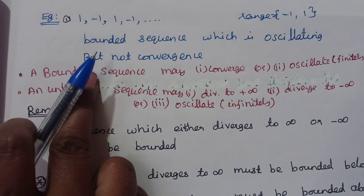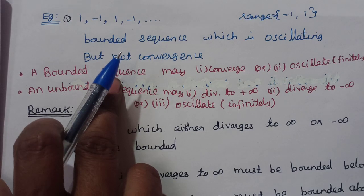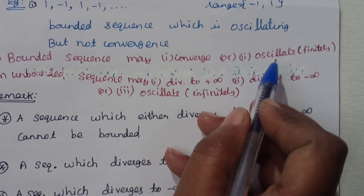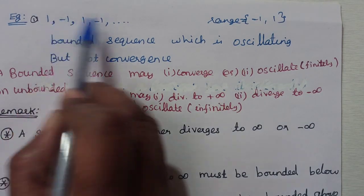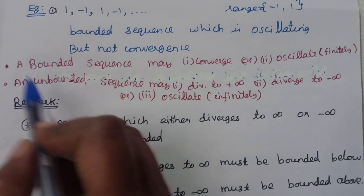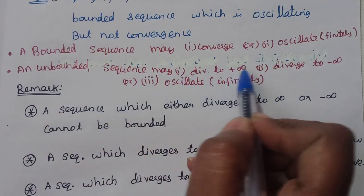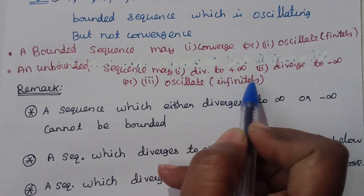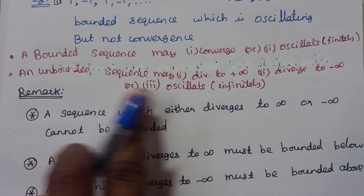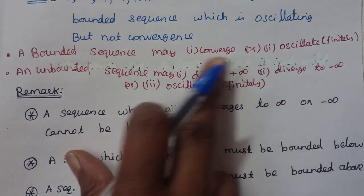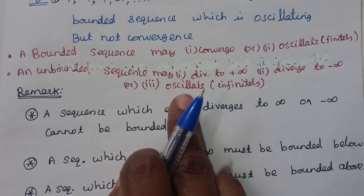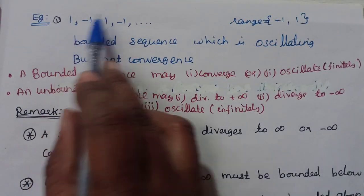Summary of results: convergent implies bounded; bounded does not imply convergent; unbounded sequence is divergent. Sequences fall into 5 categories: bounded sequences are either convergent or oscillate finitely. Unbounded sequences are divergent — either diverging to +∞, diverging to -∞, or oscillating infinitely.